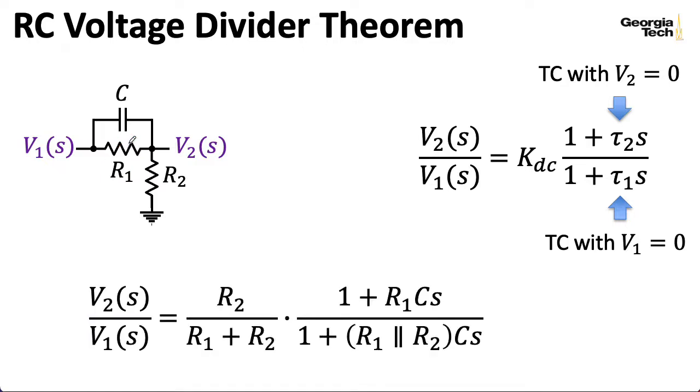if we then open the capacitor to compute the value of the voltage divider at DC, well, at DC, we open this up, and I just have R2 over R1 plus R2, according to our standard voltage divider rules. All right.